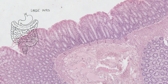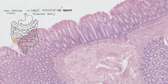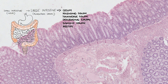The large intestine is a part of the alimentary canal and is a continuation of the small intestine, specifically of the ileum. It consists of several parts: cecum, ascending colon, transverse colon, descending colon, sigmoid colon, and rectum.